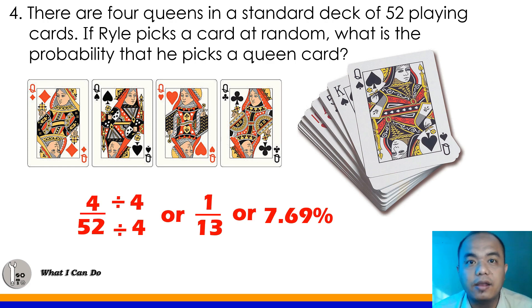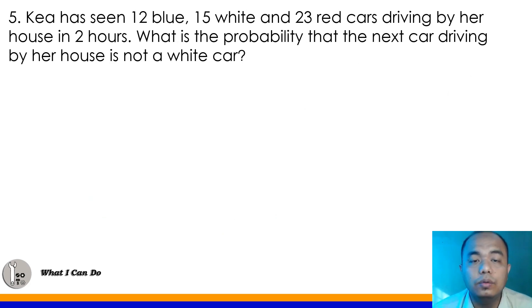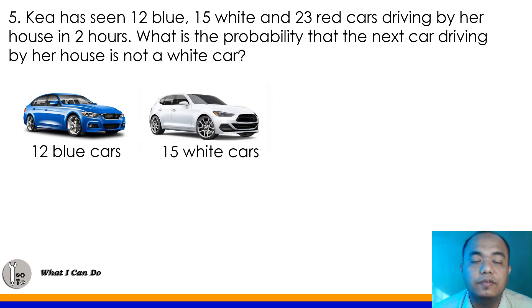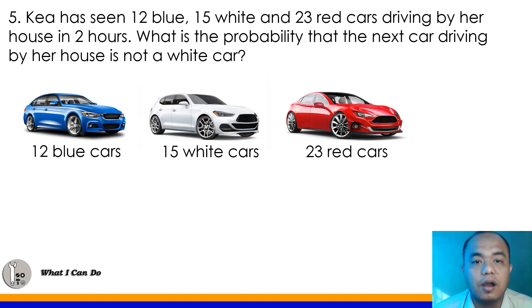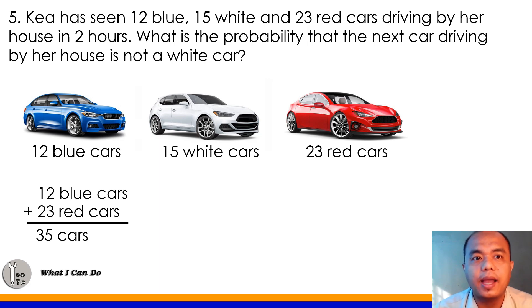And, number 5. Kia has seen 12 blue, 15 white, and 23 red cars driving by her house in 2 hours. So, she saw 12 blue cars, 15 white cars, and 23 red cars. Now, the question here is, what is the probability that the next car driving by her house is not a white car? So, what is the probability class that a non-white car will pass by their house? Now, what will you do? Very good. Add the blue and the red. That would be 12 plus 23 would equal 35 cars. So, we have 35 cars class that are not white that passed by Kia's house.